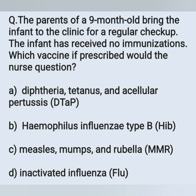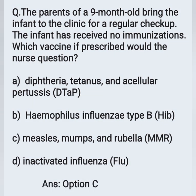The next question: The parents of a 9-month-old bring the infant to the clinic for a regular checkup. The infant has received no immunizations. Which vaccine, if prescribed, would the nurse question? Options: A: DPT, B: Haemophilus influenzae type B (Hib vaccine), C: measles, mumps and rubella (MMR), D: inactivated influenza (flu vaccine). The correct answer is Option C, MMR vaccine. DPT, Hib, and influenza vaccine can be given, but MMR should not be given first at this age.